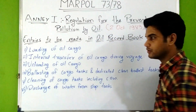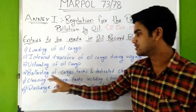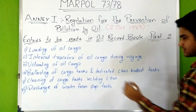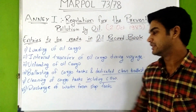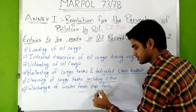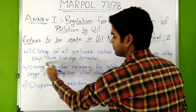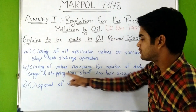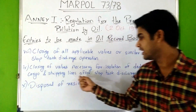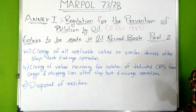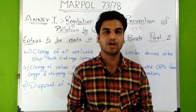Entries to be made in Oil Record Book Part 2 include: loading of oil cargo; internal transfer of oil cargo during voyage; unloading of oil cargo; ballasting of cargo tanks and dedicated clean ballast tanks; cleaning of cargo tanks including crude oil washing; discharge of water from slop tanks; closing of all applicable valves after slop tank discharge operations; closing of valves necessary for isolation of dedicated CBTs from cargo and stripping lines; and disposal of residues.